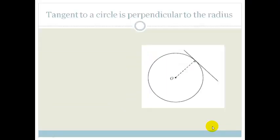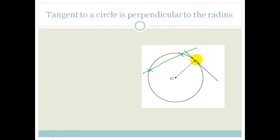A tangent is a line that just touches — it doesn't cross the circle at all. So for example if I drew a line like this, this would not be a tangent because it crossed the circle in two places. A tangent just touches. Something that we've taken as known is that a tangent is always perpendicular to the radius, and we can use this in our theorems.